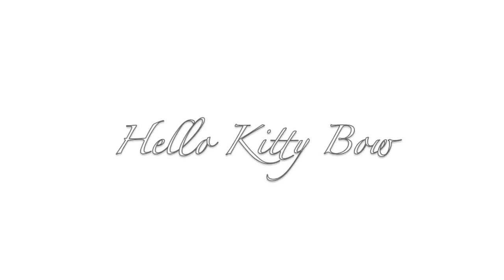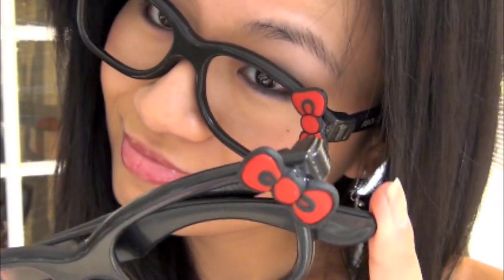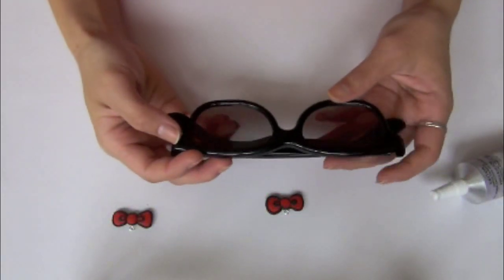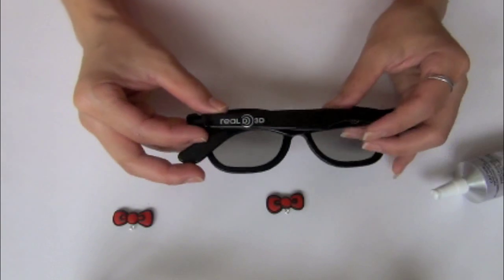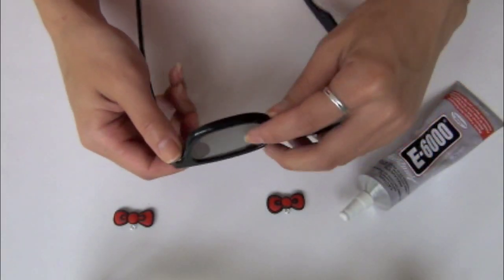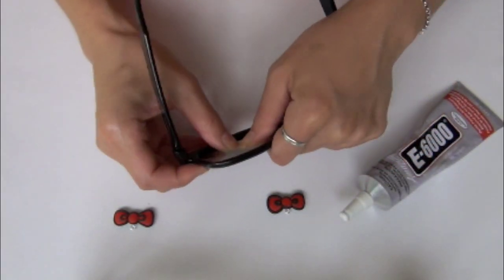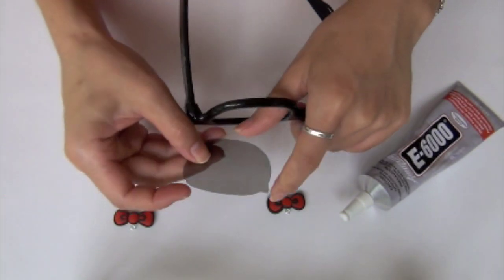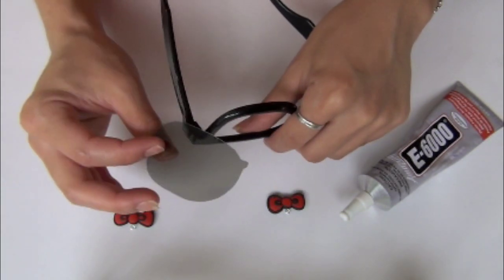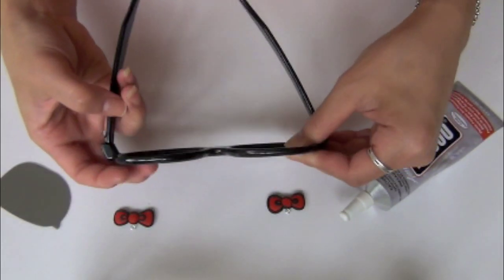First, the Hello Kitty bow. If you guys wanna learn how to make it, click on the bow or check the info box. To put together the glasses is really easy. All you gotta do is pop out the lens like so. And be sure to do it on both sides.